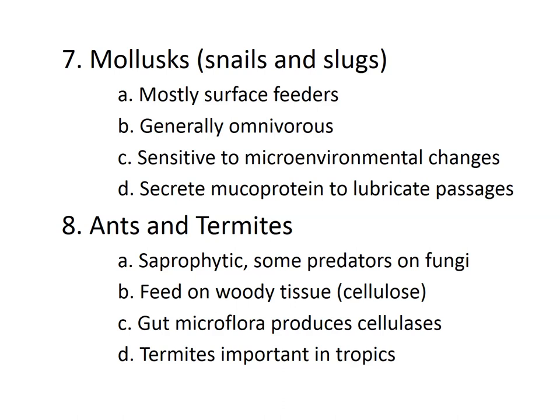Diplocardia are found in the subsoil with high organic matter, also known in prairie soil with high grasslands. Mollusks, including snails and slugs, are part of soil fauna. They are surface feeders and omnivorous. They are sensitive to micro-environmental changes and can serve as indicators of environmental quality — their presence indicates a clean environment, and their absence may indicate pollution. Snails and slugs secrete mucoproteins that help lubricate passages and aggregate soil particles.